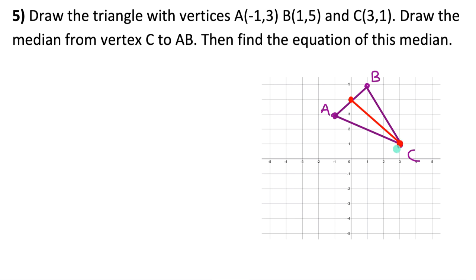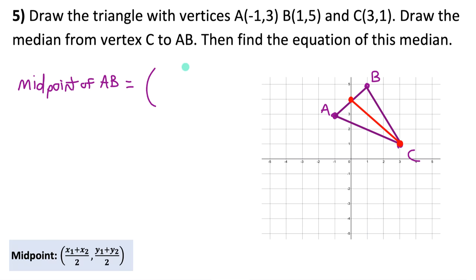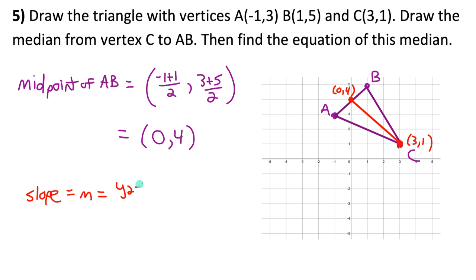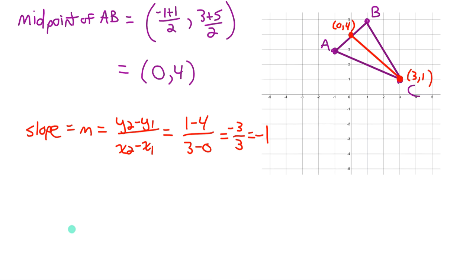I know the line passes through point C and through the midpoint of AB. First, find the midpoint of AB: average the x-coordinates (−1 + 1)/2 = 0, average the y-coordinates (3 + 5)/2 = 4. Midpoint is (0, 4). Point C is (3, 1). Now calculate slope: m = (y₂ − y₁)/(x₂ − x₁) = (1 − 4)/(3 − 0) = −3/3 = −1. The slope of the median is −1.